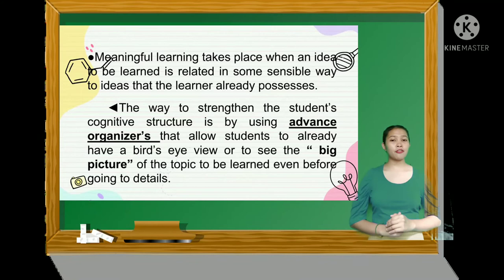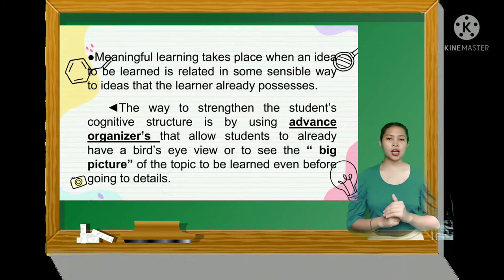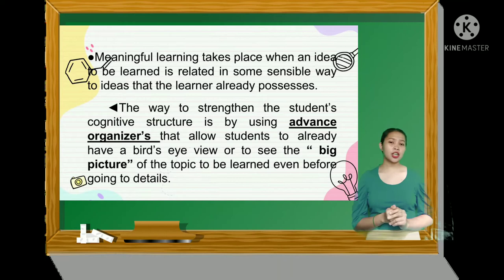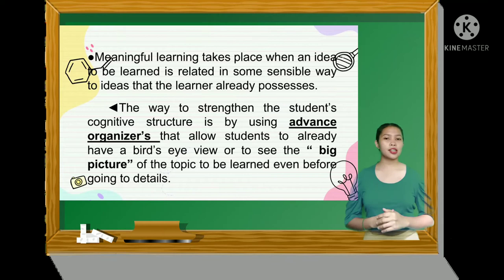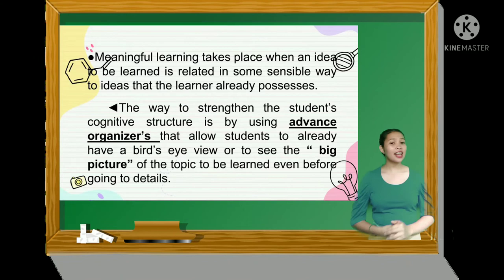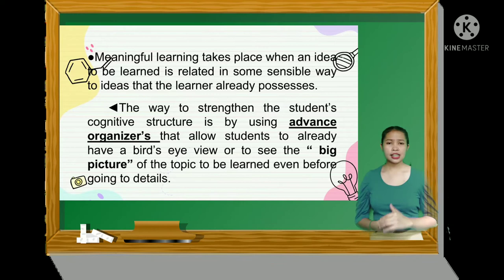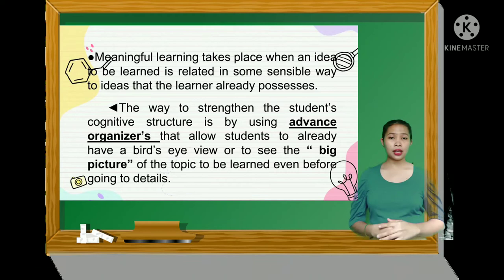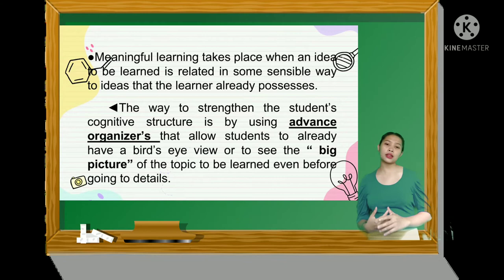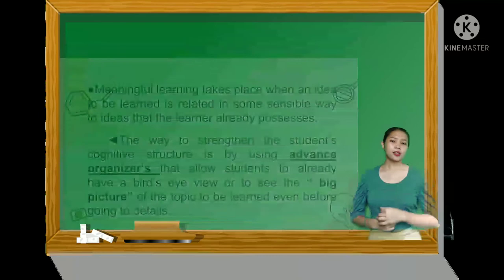Ausubel believes that before new materials can be presented effectively, the student's cognitive structure should be strengthened. When this is done, acquisition and retention of new information is facilitated. The way to strengthen the student's cognitive structure is by using an advanced organizer that allows students to already have a bird's eye view — to see the big picture of the topic to be learned, even before going into details. As a teacher, let your students have a preview of the given topic so they can participate in the discussion with some prior idea of what will be covered.